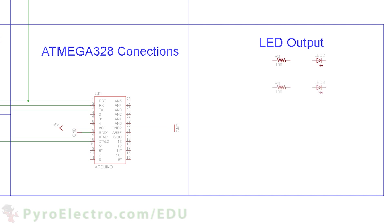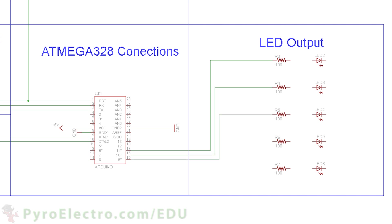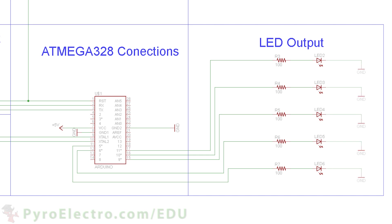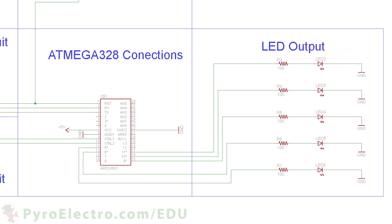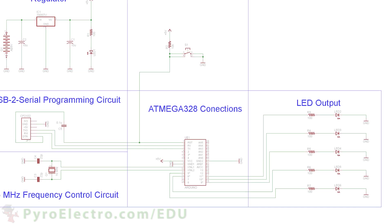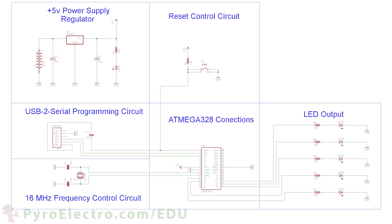And finally, five LEDs with five current limiting resistors connect to digital pins 5, 6, 9, 10, and 11. All of these digital pins are special in that they can output PWM. And there we have the complete hardware schematic for this lesson.